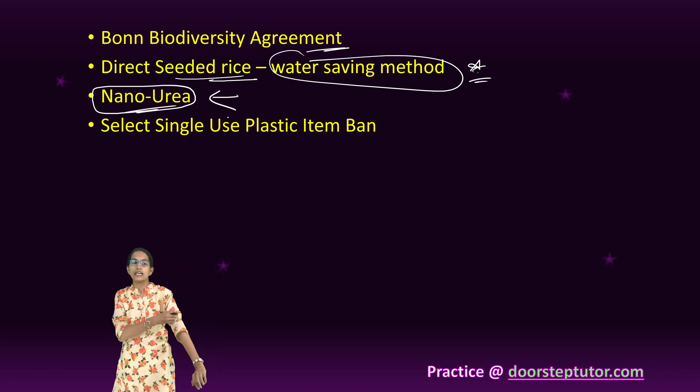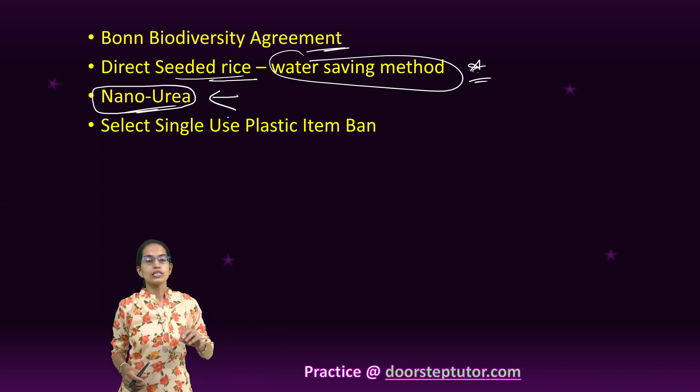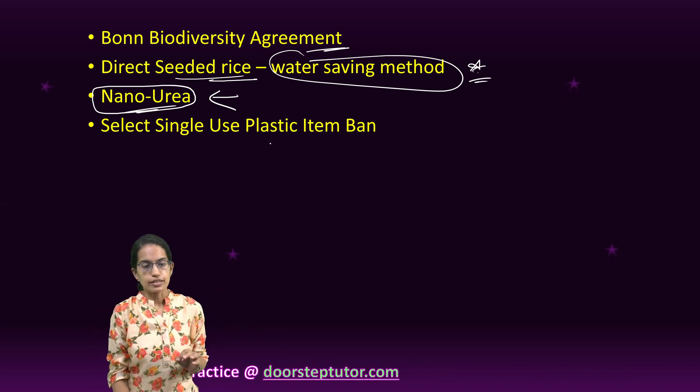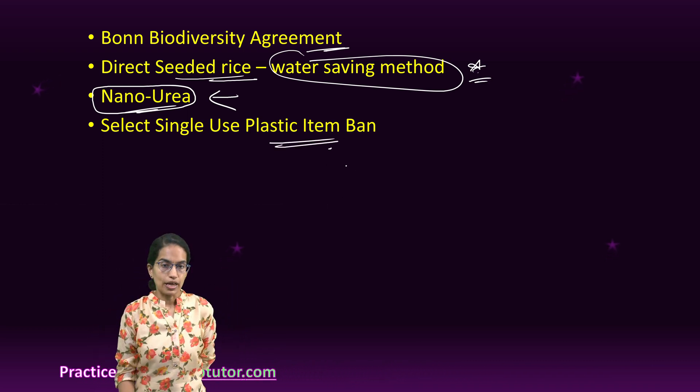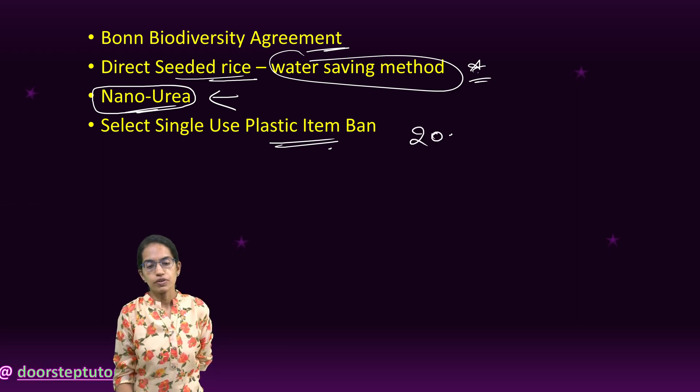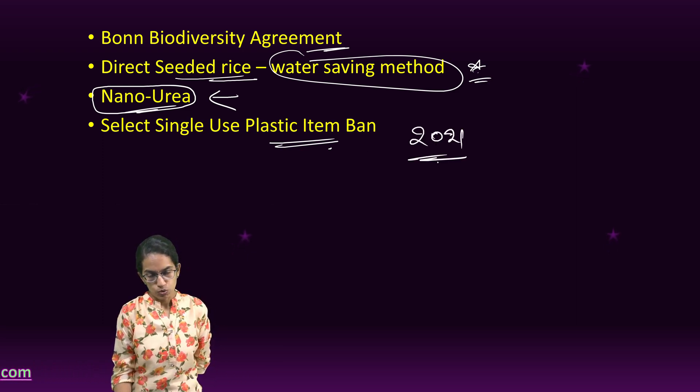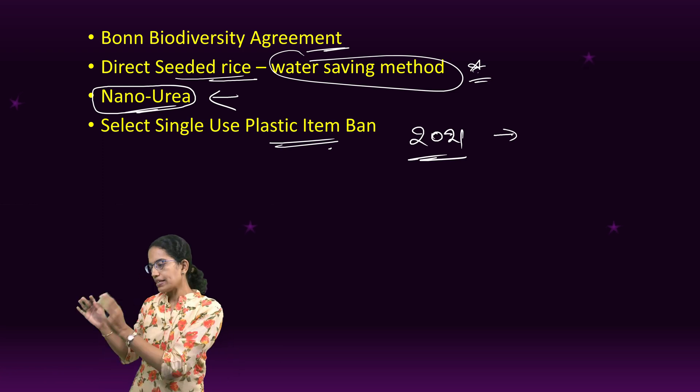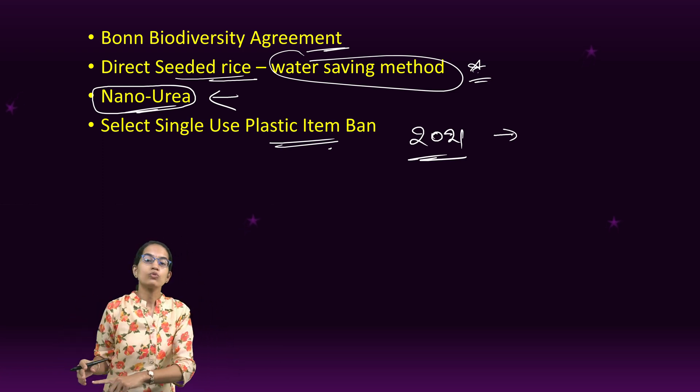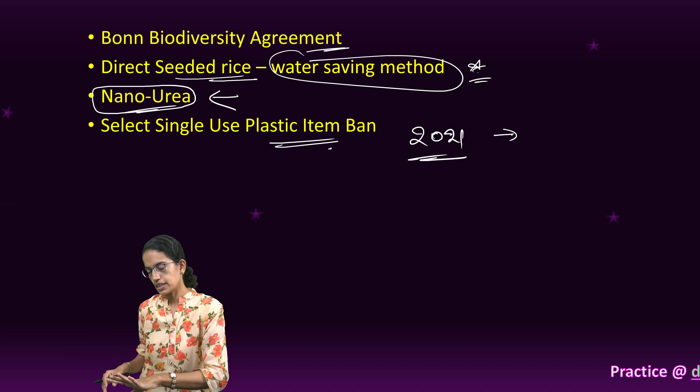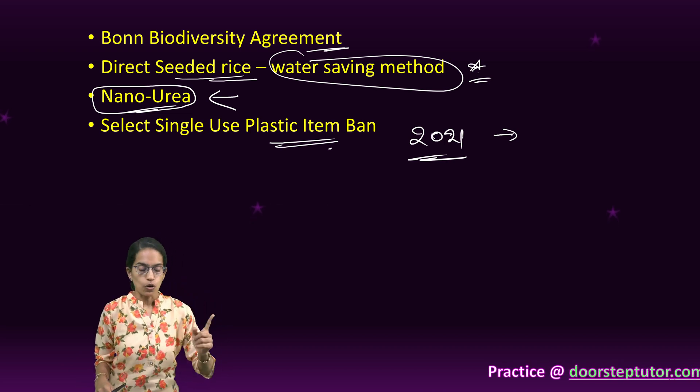Then we have a ban on the selected single-use plastic items. Now, what is single-use plastic as per the definition which was given by Government of India in 2021? It says that the plastic items should not be reused for the same purpose twice, so either it should be recycled or it should be disposed of, and that's the key important thing.